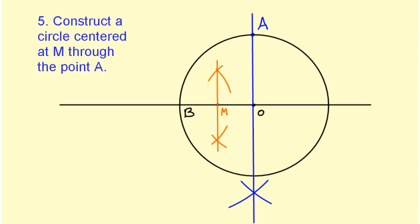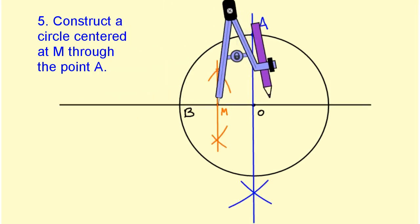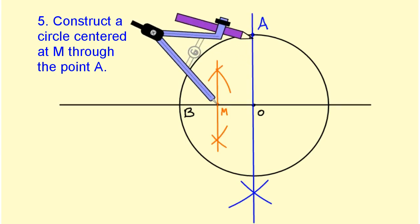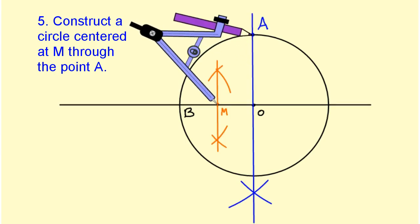Next we need to construct a circle centered at point M and through point A. So I will put my compass at M and I will open my compass up so that it measures the distance from M to A. Now I will draw the circle.